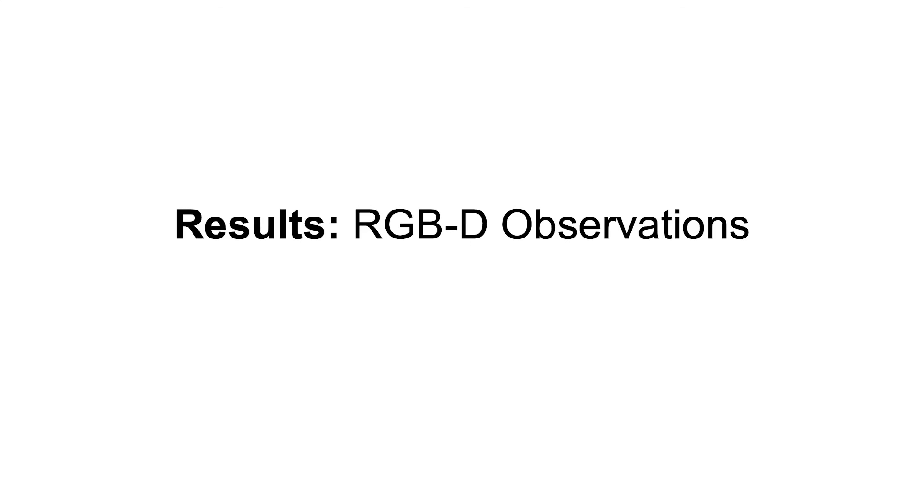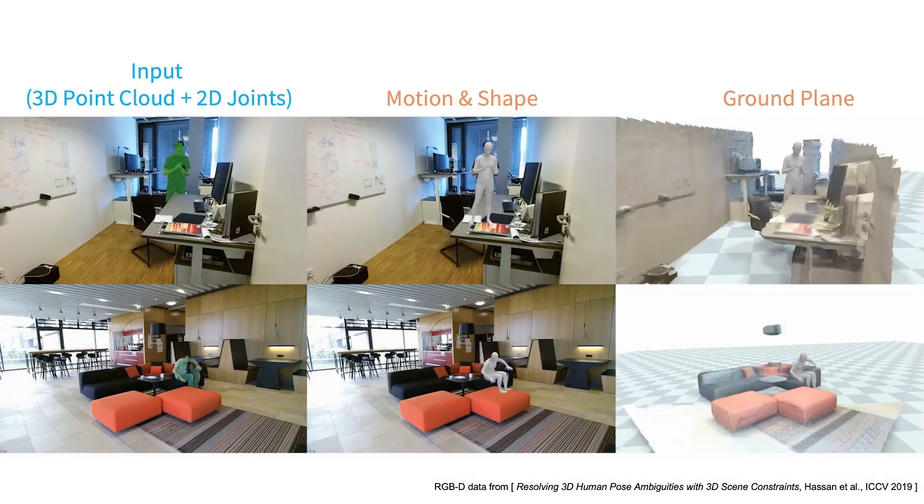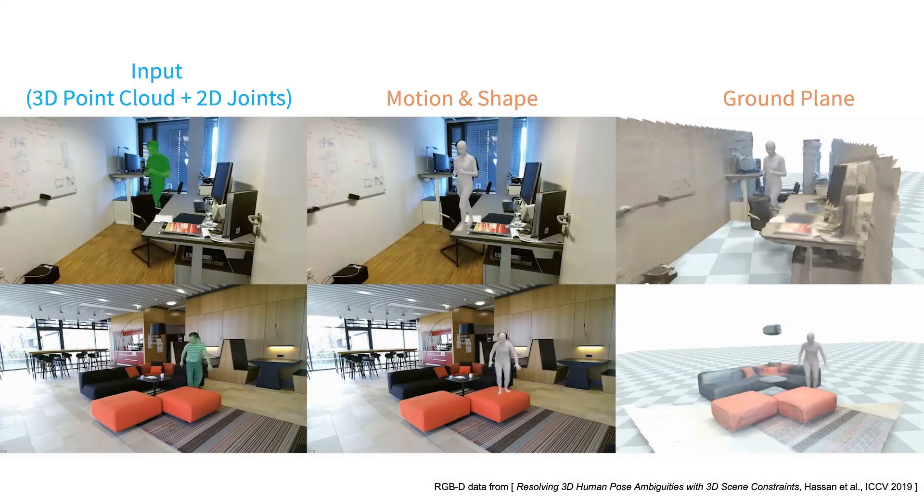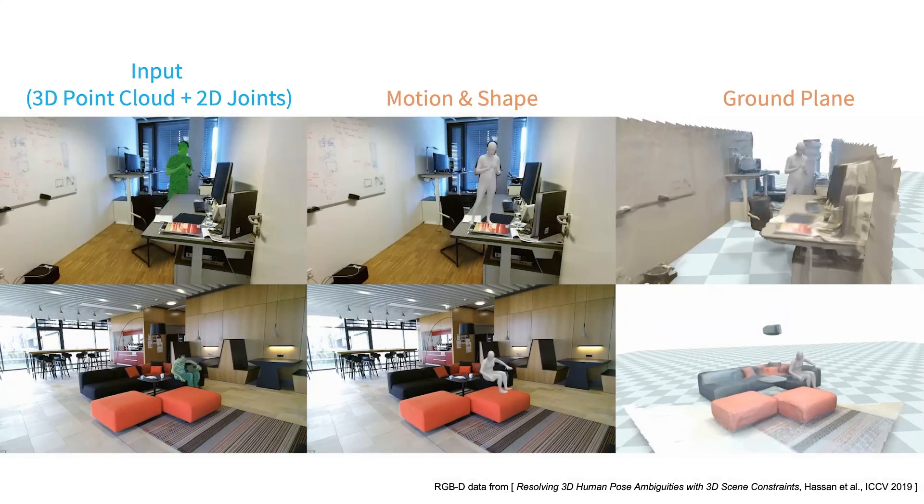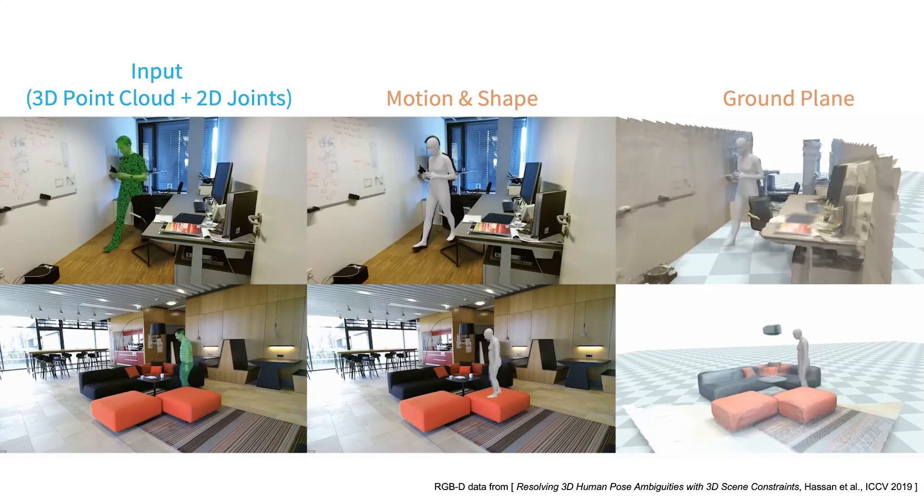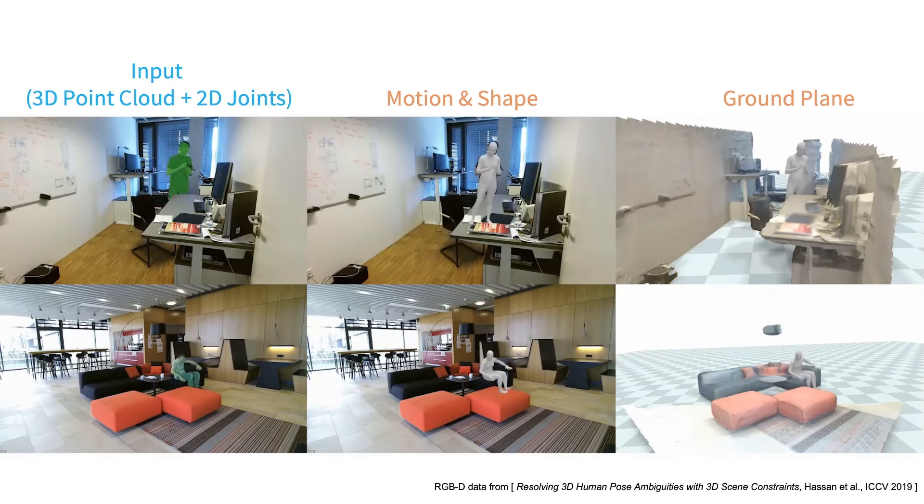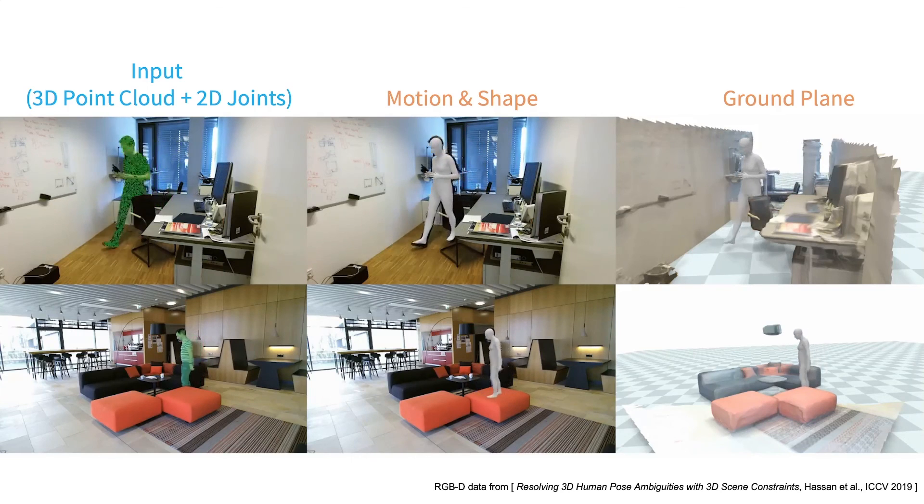By fitting to both 3D point clouds and 2D joints, the proposed optimization additionally works for RGBD videos. In these examples, output motions and ground planes are visualized with the true scene mesh for reference. Despite not using this scene mesh as input, estimated motions realistically interact with the environment.